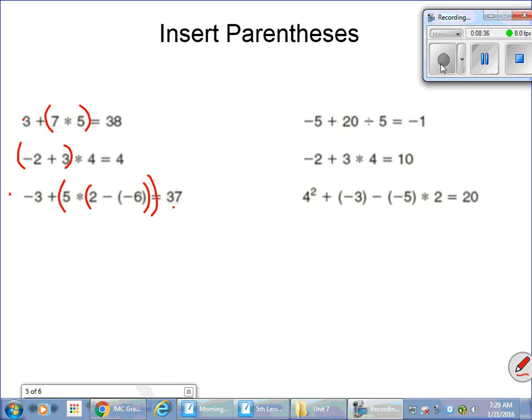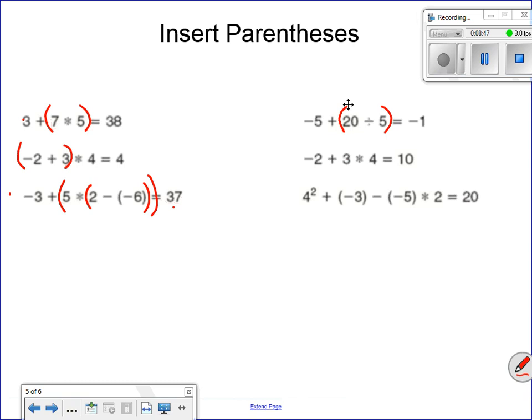Negative 5 plus 20 divided by 5. I have to get to a negative 1. So that means I have to break that 20 down pretty small in order to get to a negative 1. What if I did 20 divided by 5? That would give me 4. I would have a negative 5 plus a 4. My positive 4 would take 4 negatives away, which would leave me with 1 negative.